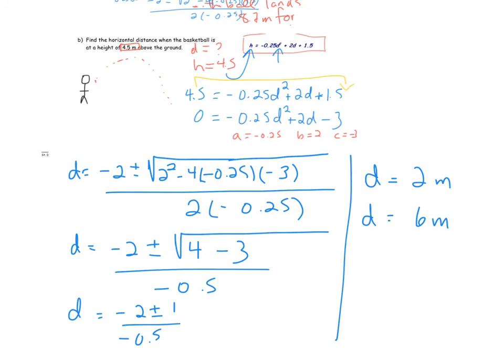Okay, so here is my solution. Substituting in my values into the quadratic equation, remembering that there's a positive and a negative solution, I ended up with D equals 2 meters and D equals 6 meters. And so now at this point, how do I decide which of those is the correct answer? I'm supposed to find the horizontal distance when the basketball is at a height of 4.5 meters. And I have two positive values. So how do I exclude one?